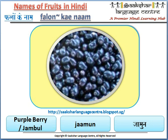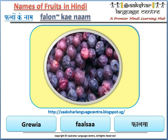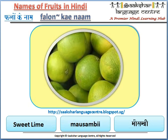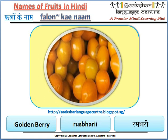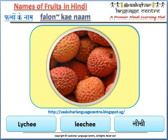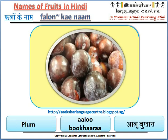Purple berry or jambul is jamun. Grouilla is falsa. Sweet lime is mossambi. Golden berry is raspberry. Lychee is leechee. Plum is aloo bukhara.